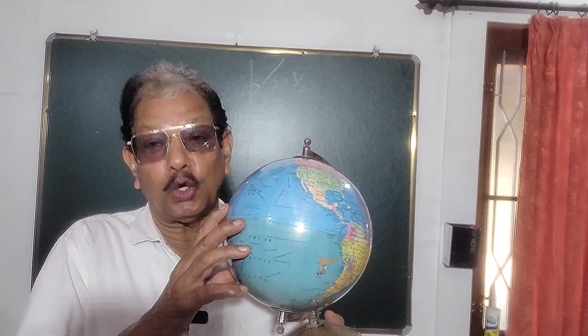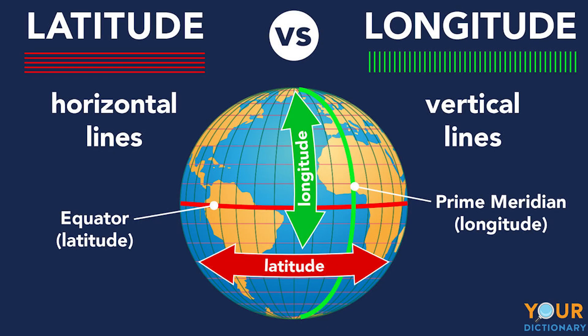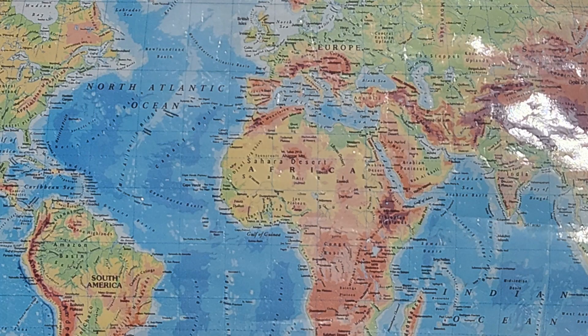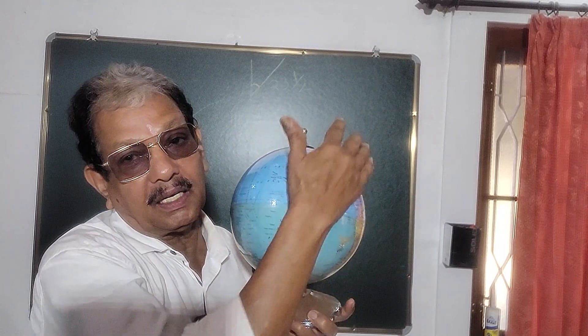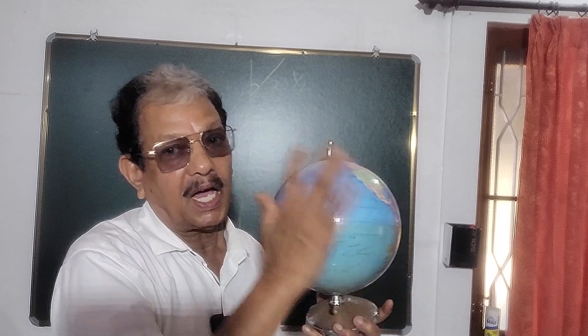We can see on the globe and on the map, lines are drawn north to south and east to west. If we are taking a globe in our hand, or there is a map on the blackboard or on the wall, the upper area is called north and the lower one is south. The right side of the listeners watching this video is east, and the other side is west.